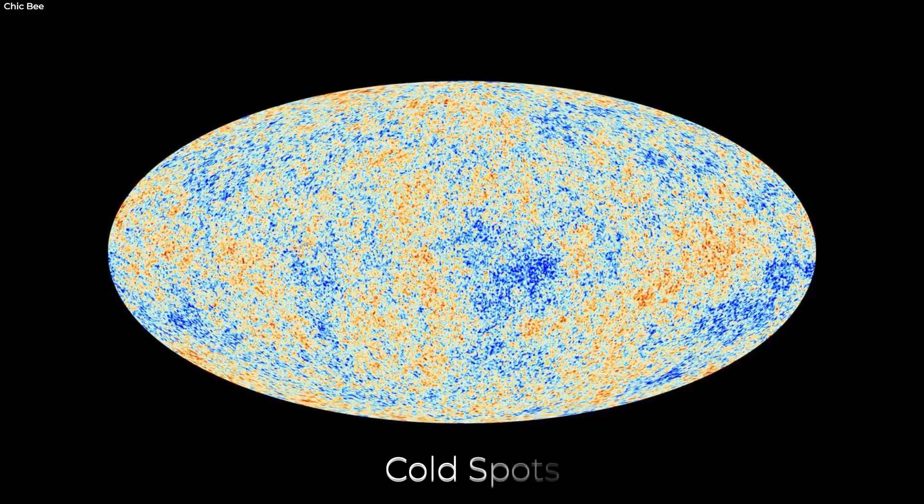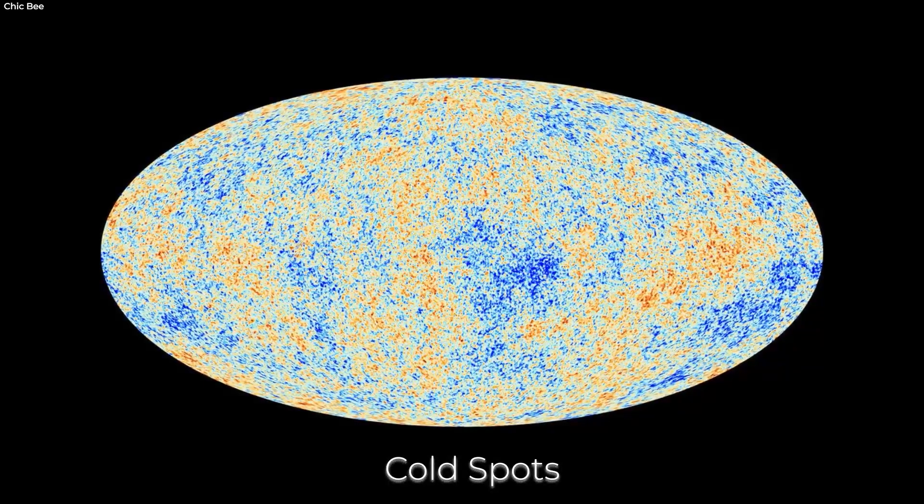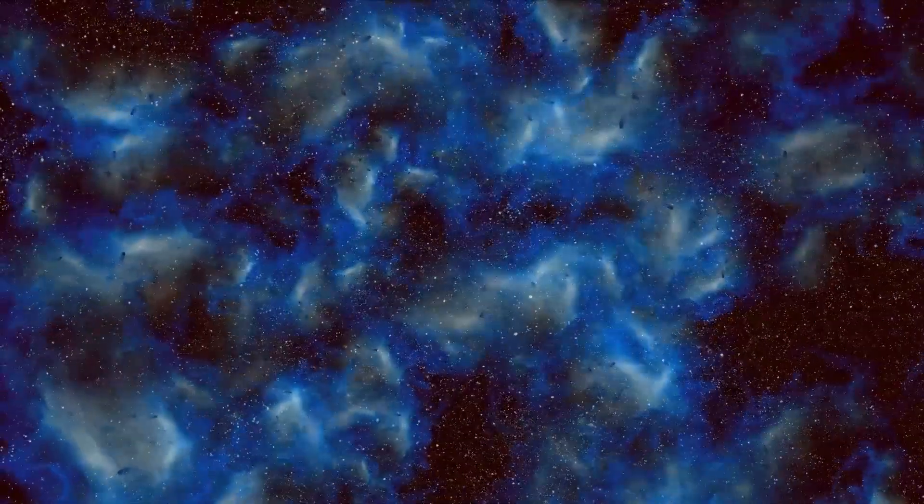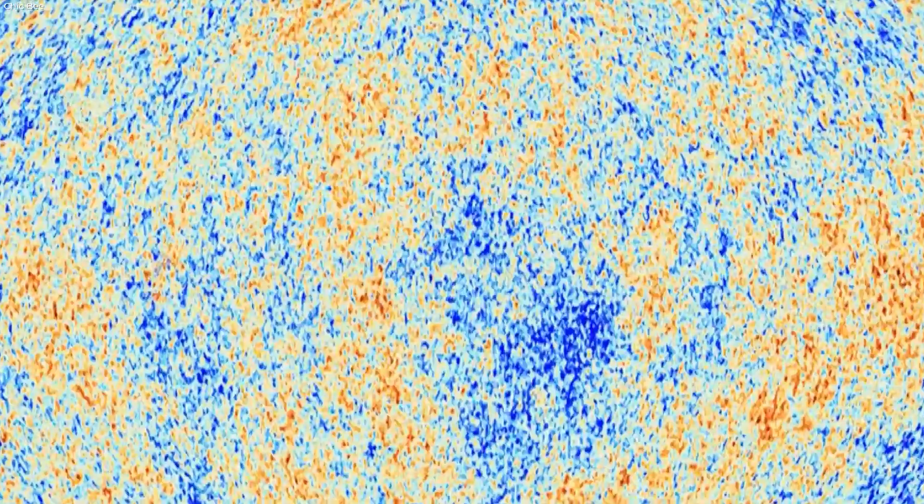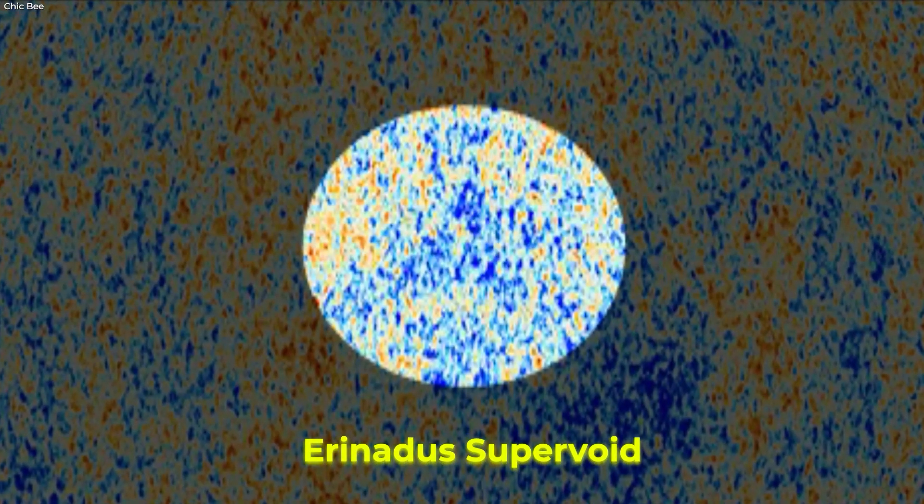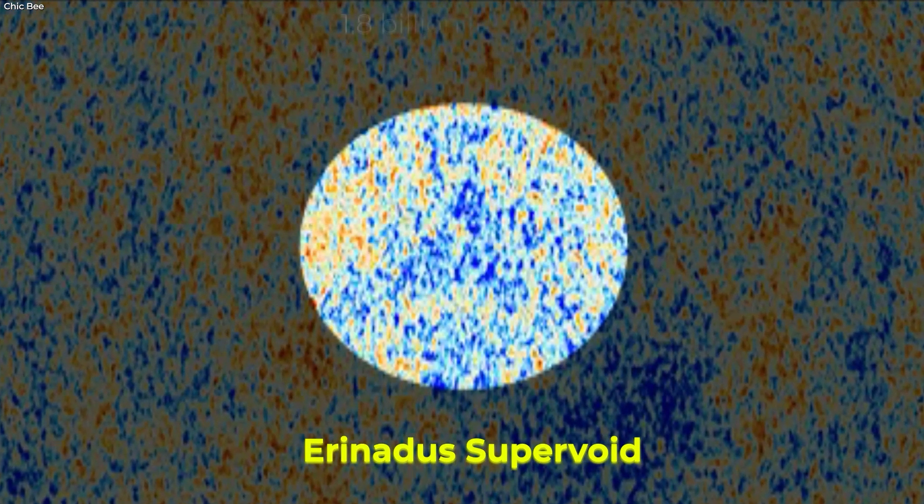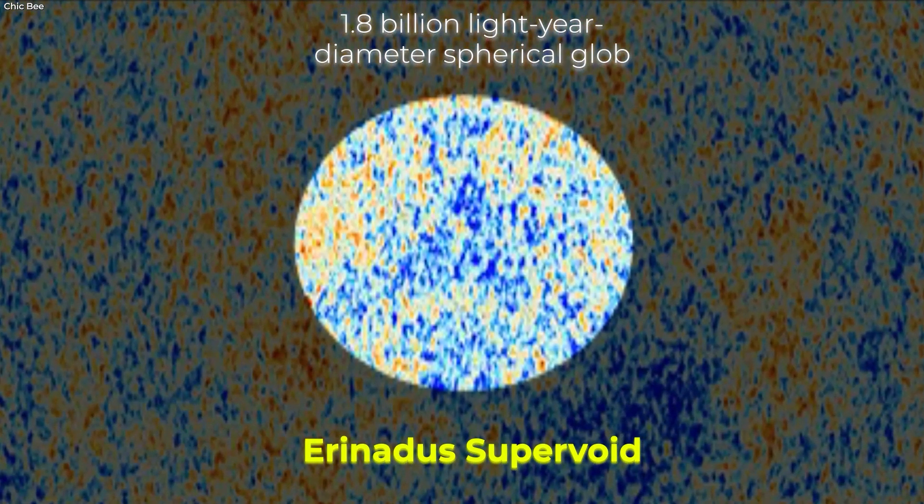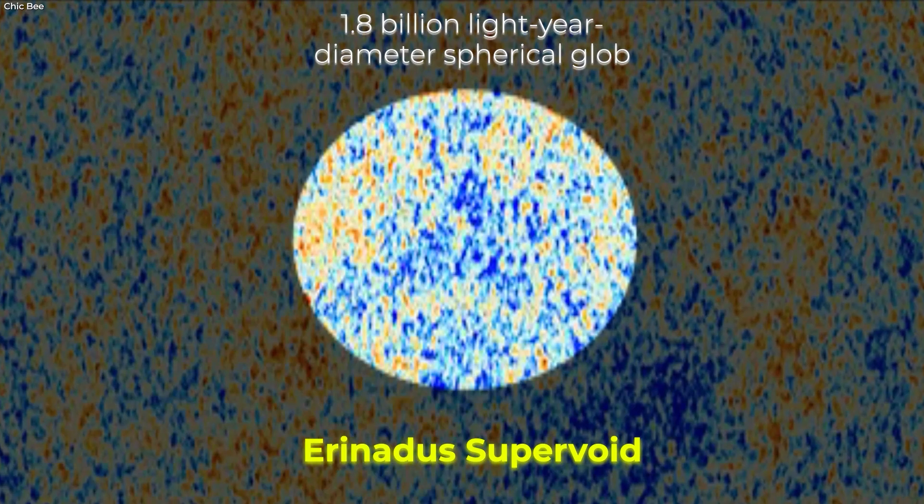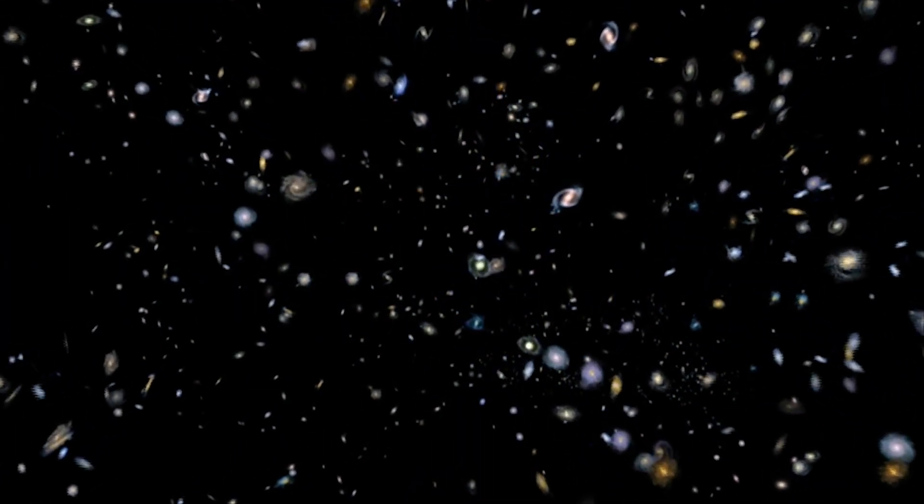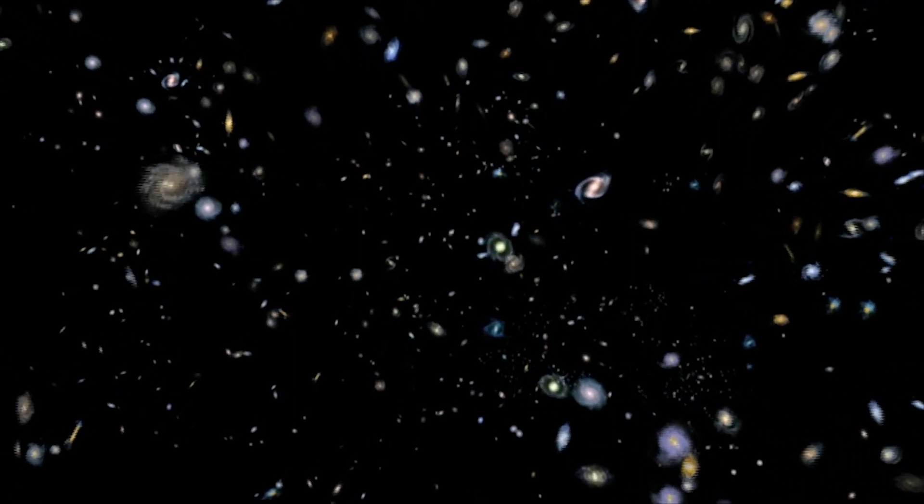These are one of the cold spots of the cosmic microwave background. Supervoids are comparatively bigger voids of vast area, having nothing. This is the biggest supervoid in our universe. The so-called supervoid is a 1.8 billion light year diameter spherical glob that stands out for its extraordinary emptiness. This supervoid must have had at least 10,000 galaxies in it. But it doesn't.